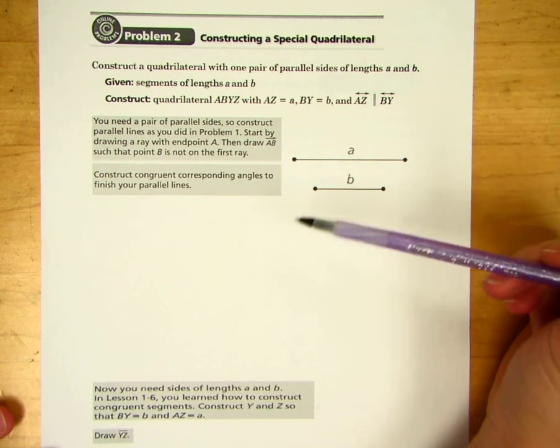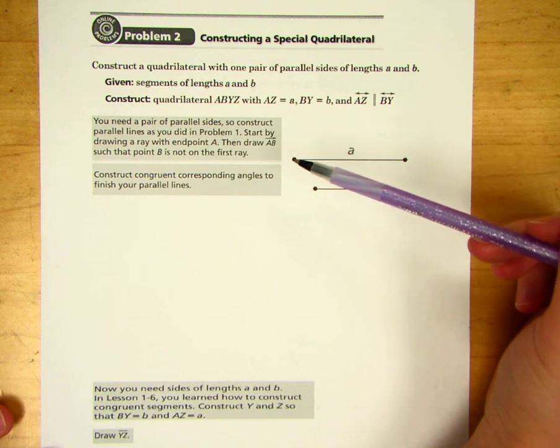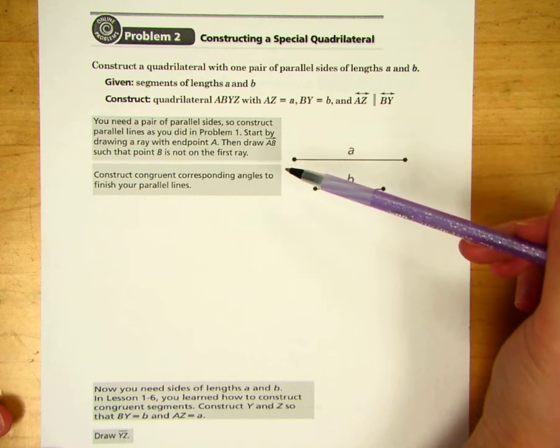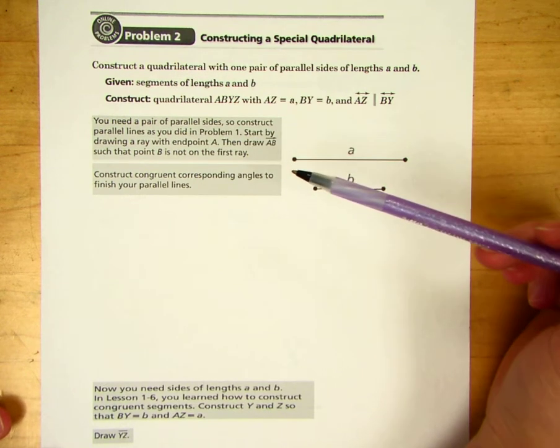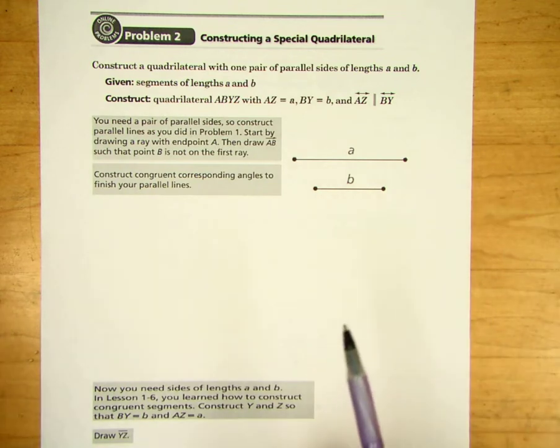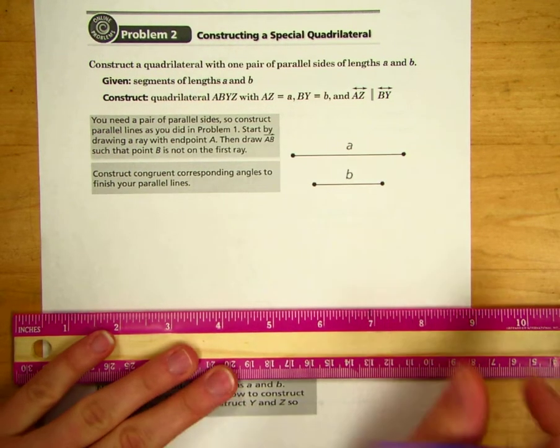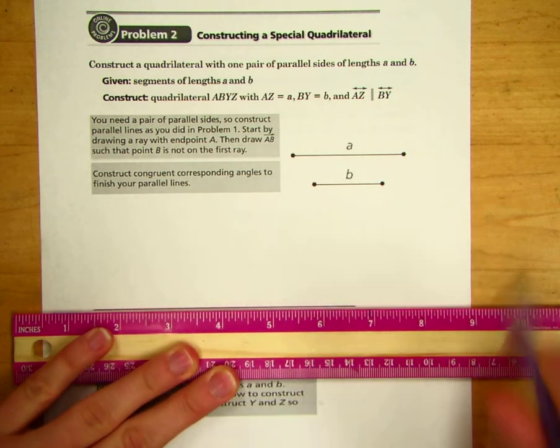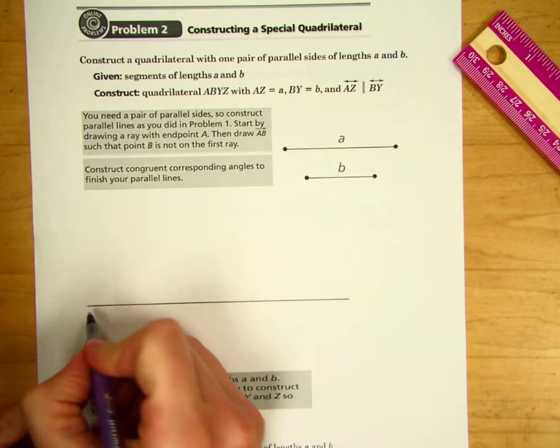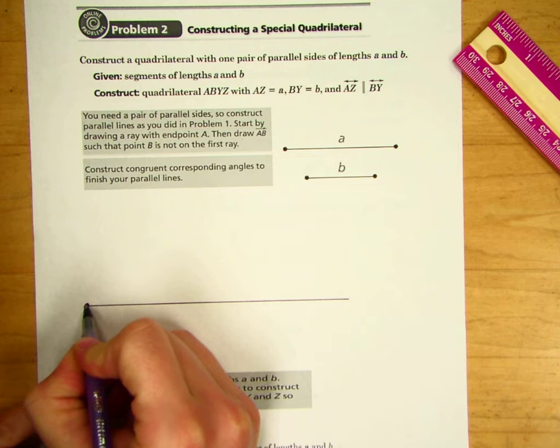You need a pair of parallel sides to construct parallel lines as you did in problem 1. Start by drawing a ray with endpoint A. I will take my straightedge, draw the ray. This is endpoint A, so I'll put my A over here.